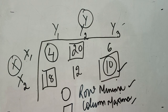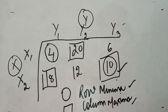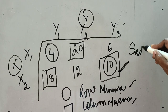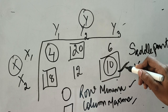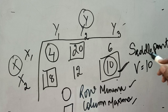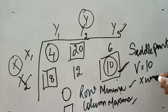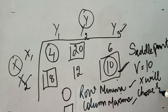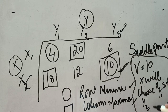Whenever a circle and a square fall on the same element, it becomes the saddle point — the value of the game. It may or may not exist in any question. If it exists, the game has a pure strategy solution and we need not proceed further. Here, the saddle point exists, so the value of game V equals 10. Player X will choose strategy X2, and Player Y will choose strategy Y3.